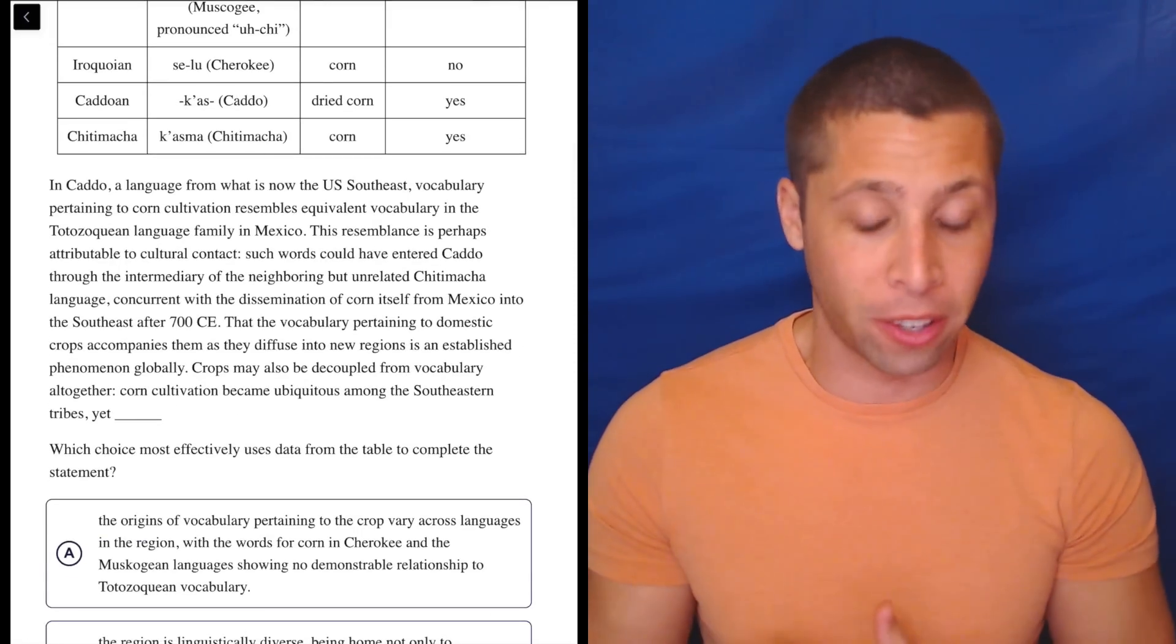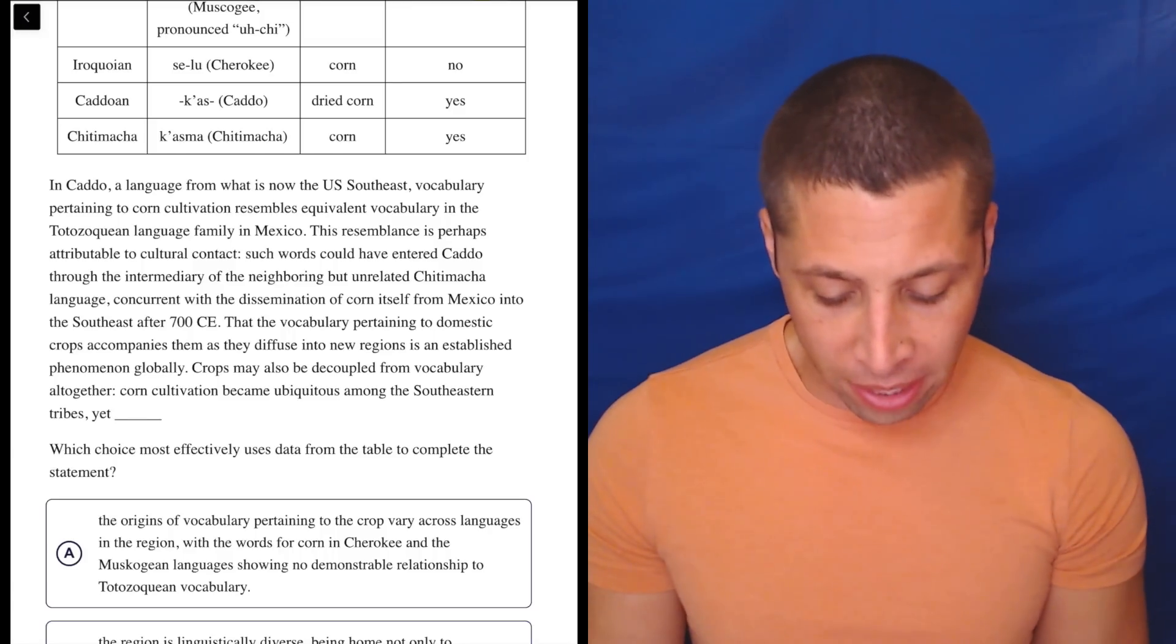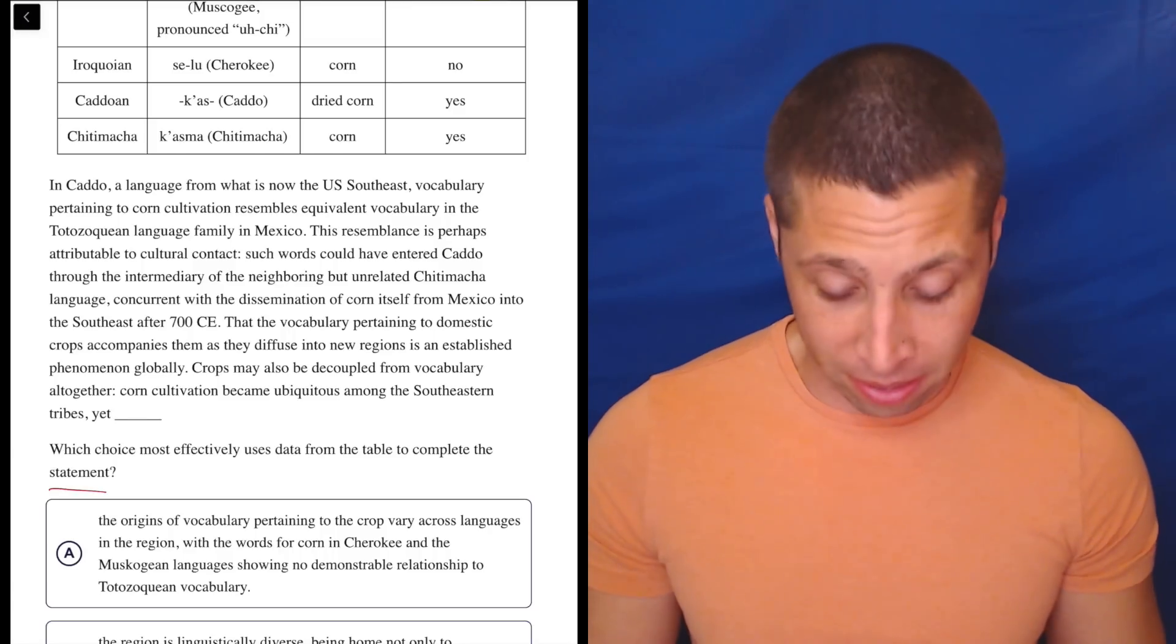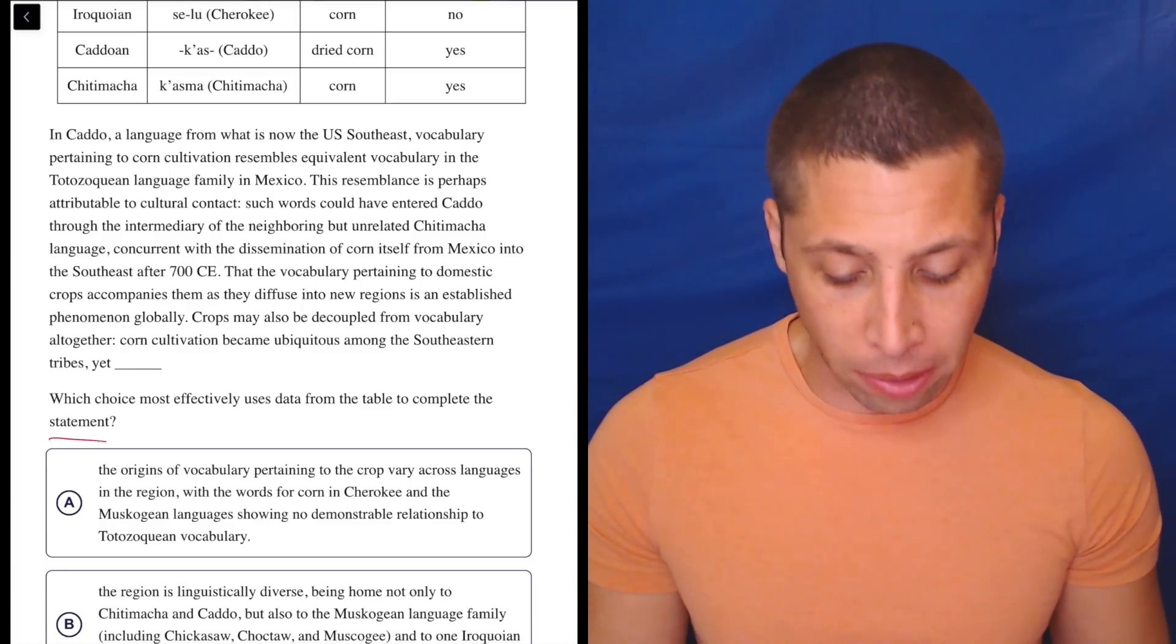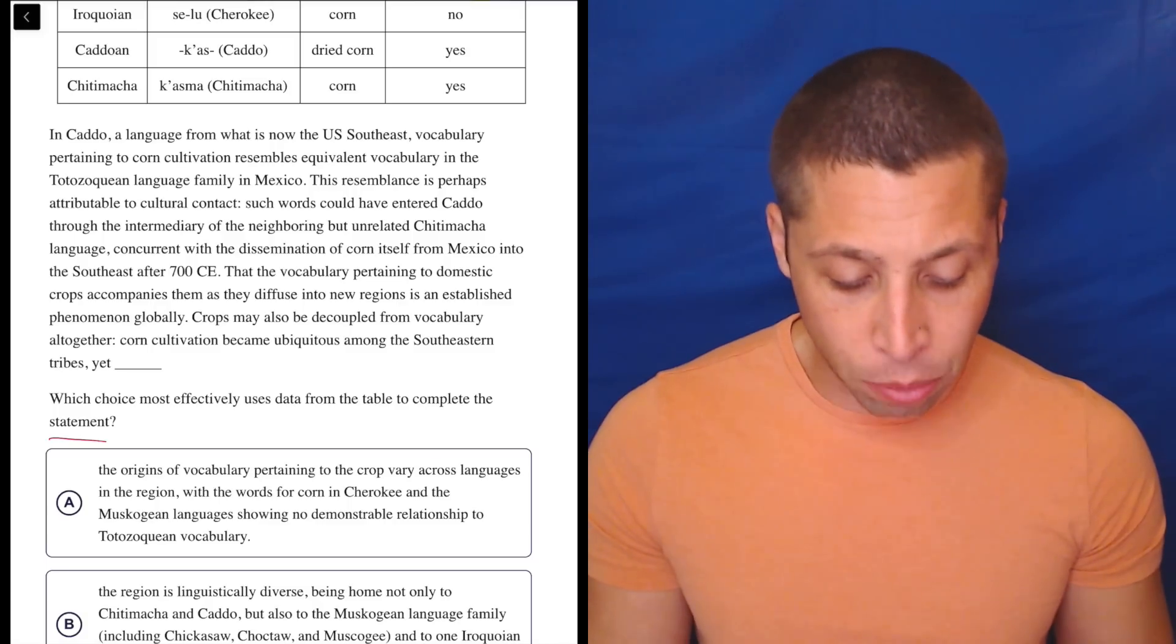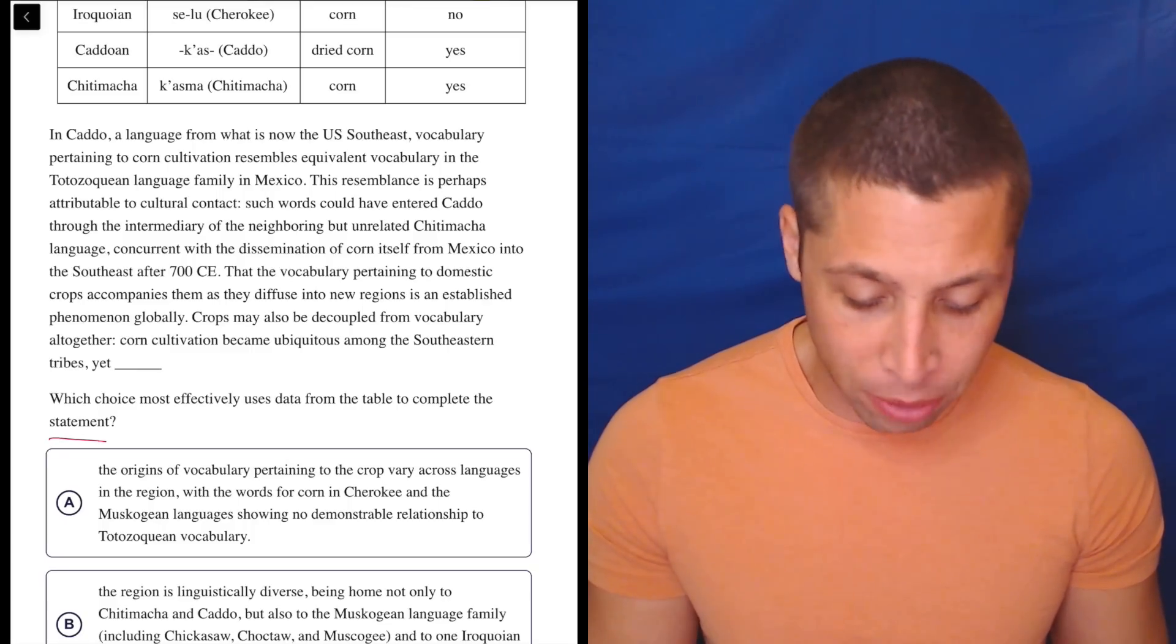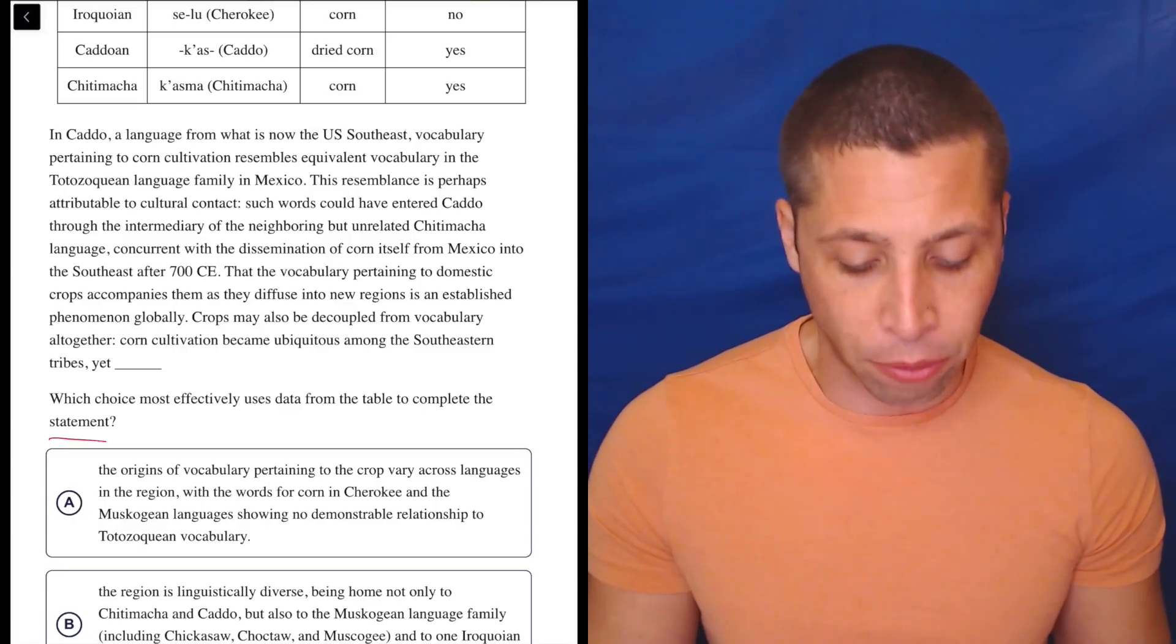Then we'll use that to understand the graph, or in this case, the chart. So we're trying to complete the statement, fill in the blank basically. In Cado, a language from what is now the U.S. Southeast, vocabulary pertaining to corn cultivation resembles equivalent vocabulary in the Tadozaquian language family in Mexico. This resemblance is perhaps attributable to cultural contact. Such words could have entered Cado through the intermediary of the neighboring but unrelated Chitimacha language concurrent with the dissemination of corn itself from Mexico into the Southeast after 700 CE.